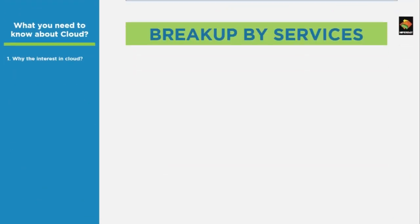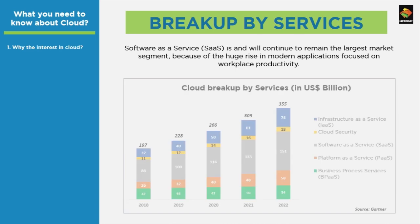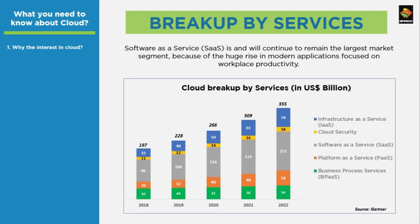To explain cloud demand and how it can help your business, let us take up SaaS for now. Software as a Service, or SaaS, is a cloud-based service where instead of downloading software on your desktop PC, you access it via an internet browser. Some examples are Gmail, Dropbox, and Mailchimp. It is one of the largest market segments in cloud and is projected to stay that way for the near future.